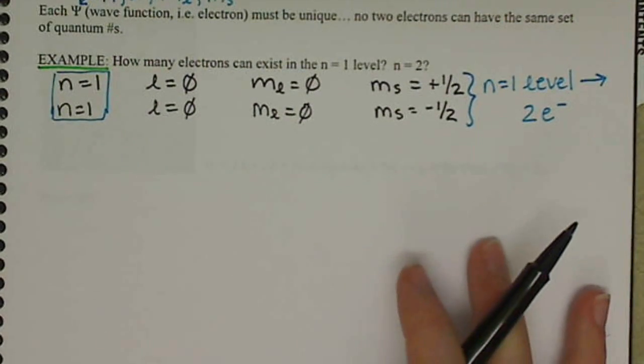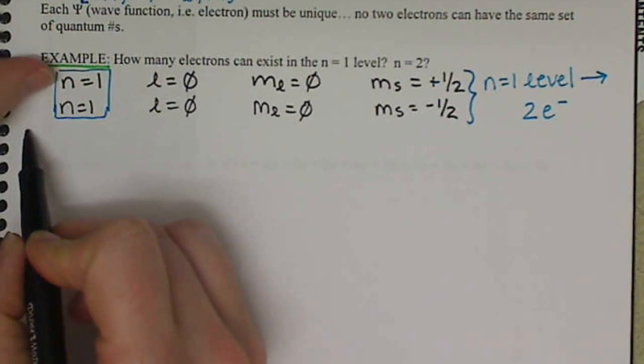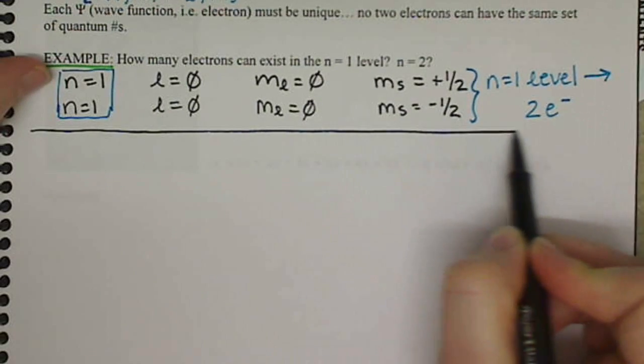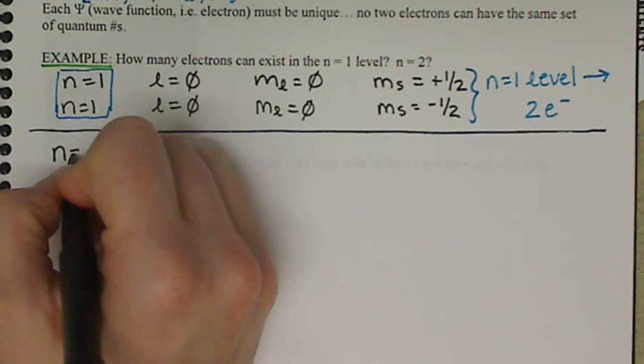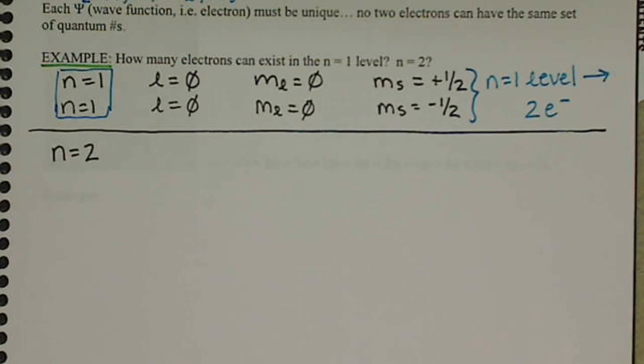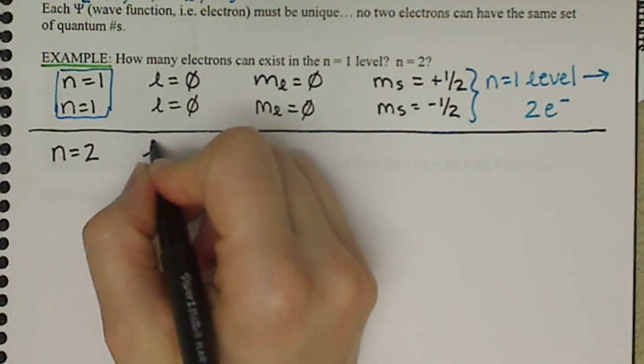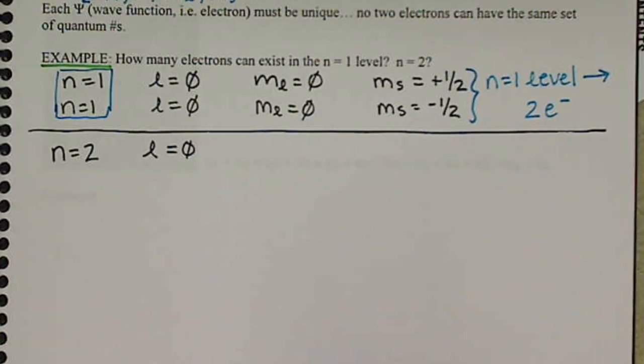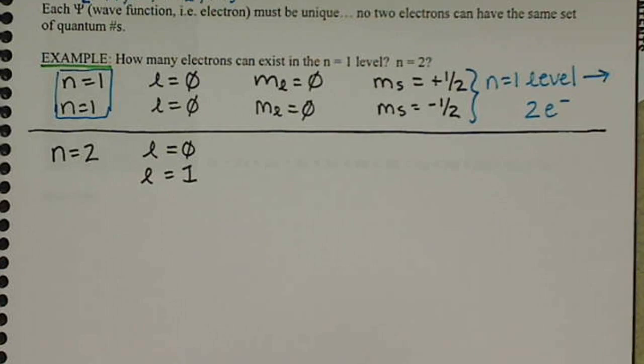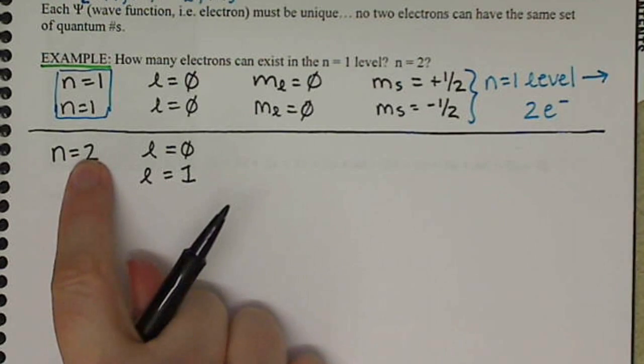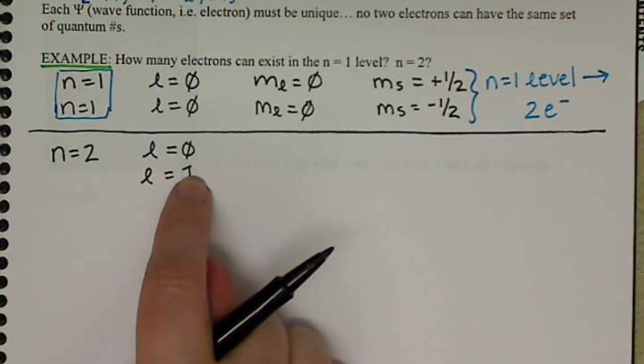All right, let's look at the N equals 2 level. So if we move up a level, so if we have N equals 2, L can equal 0, L can also equal 1, because L can equal N minus 1. So we have 0 and 1.